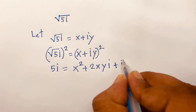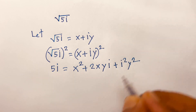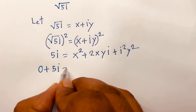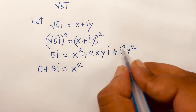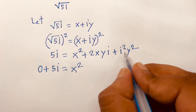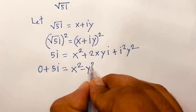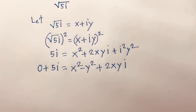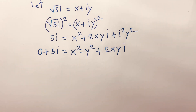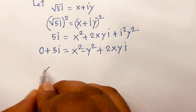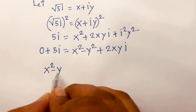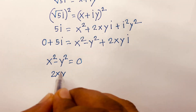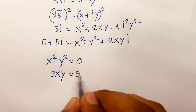So 0 + 5i equals x² + 2xyi + i²y². Since i² = −1, this becomes x² − y² + 2xyi. Comparing real and imaginary parts: the real part gives x² − y² = 0, and the imaginary part gives 2xy = 5. These are our first and second equations.